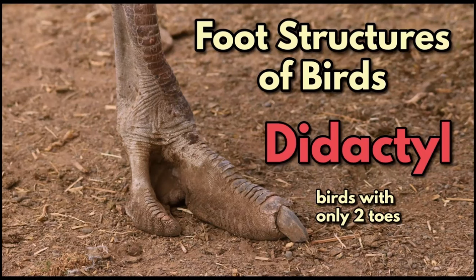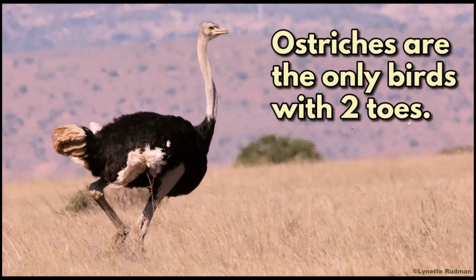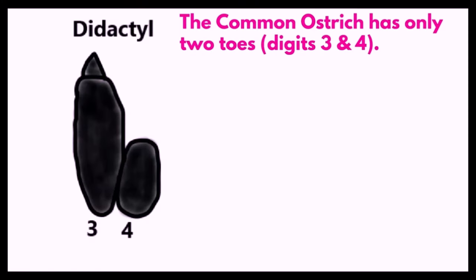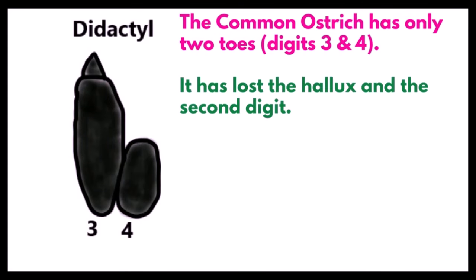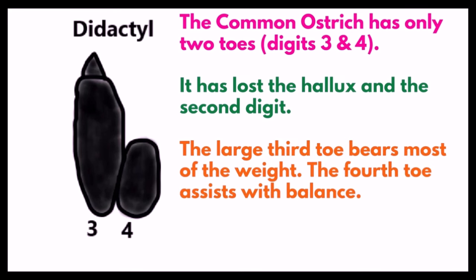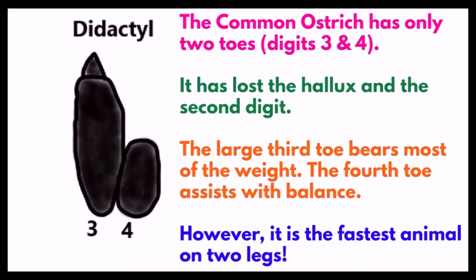Didactyl: birds with only two toes. Ostriches are the only birds with two toes — they only have digits three and four. They have lost the hallux and the second digit. The large third toe bears most of the weight, while the fourth toe assists with balance.